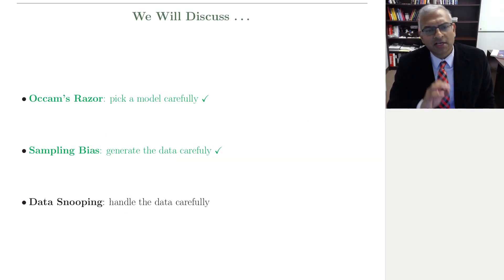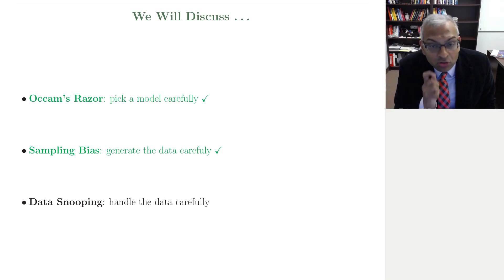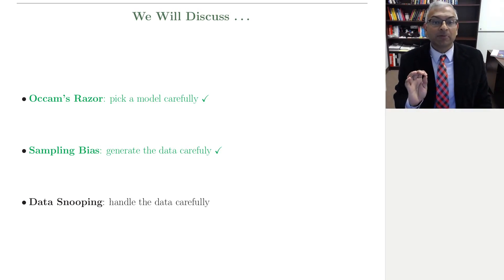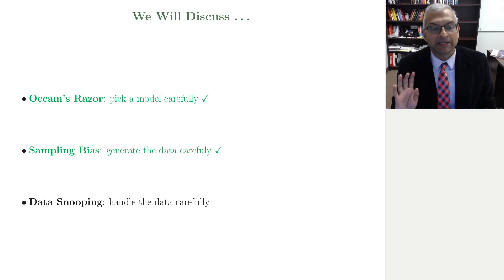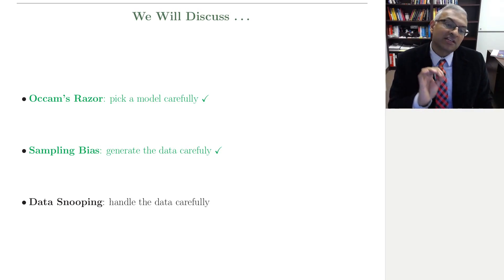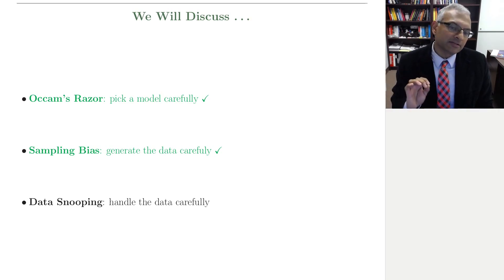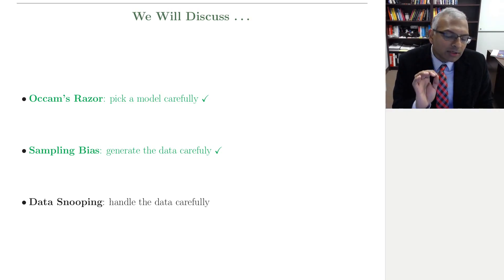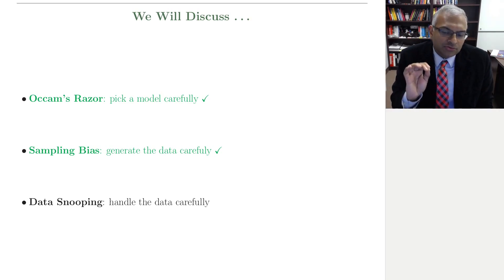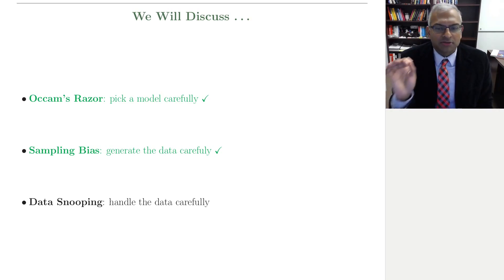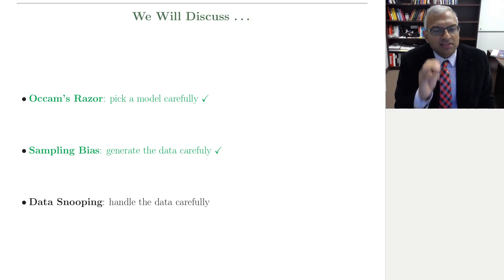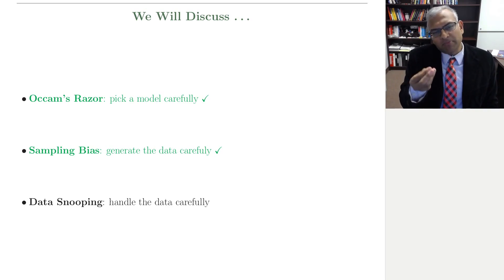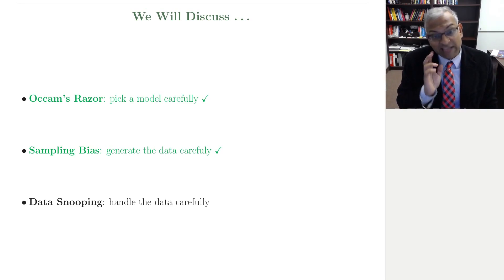We discussed Occam's razor: pick your model carefully, a simpler hypothesis set is better. And then we discussed sampling bias: make sure that your training bin and your testing bin are the same. If they're not the same, some kind of sampling bias is present.